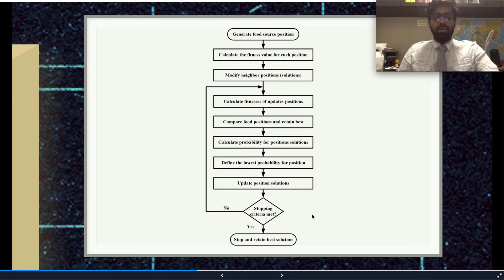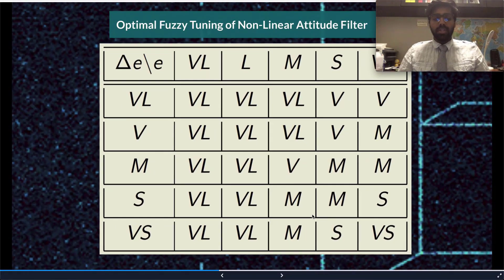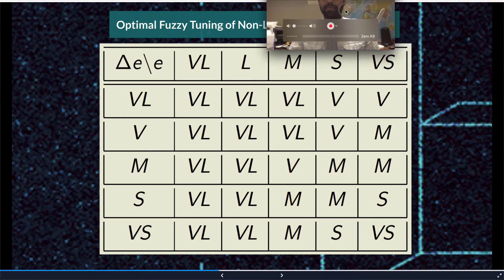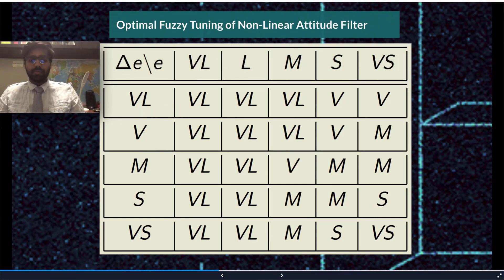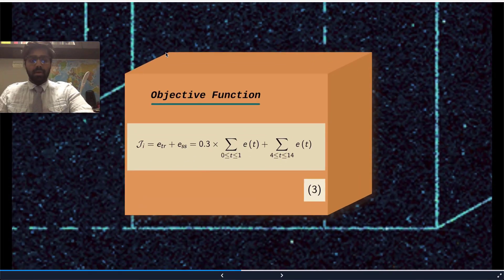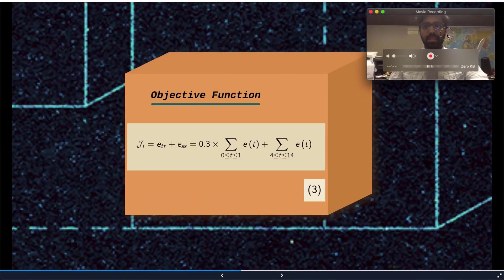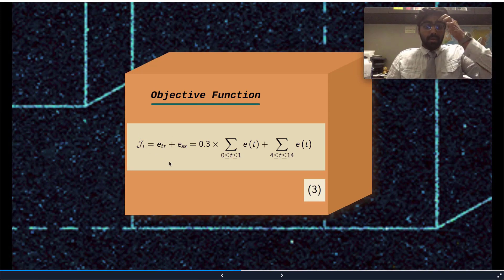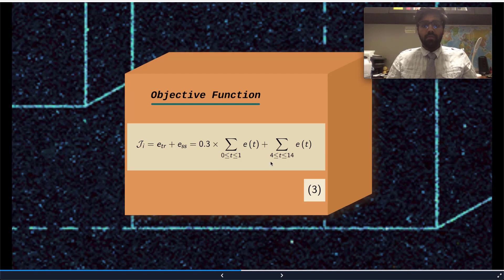We will now move on to the optimal fuzzy tuning of the non-linear attitude filter, which will be demonstrated by this table illustrating the fuzzy membership function. Here is the cost function, which is divided into two main parts. The first part is the transient time, chosen between 0 to 1 seconds. The second part is the steady-state time, chosen between 4 and 14 seconds.